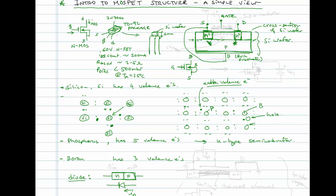If we draw that drain-bulk diode in our circuit — it points from the bulk (tied to source) to the drain. There is literally a diode there. If you took a multimeter with a diode tester and put the red lead on the source and the black lead on the drain, with gate-to-source shorted so the transistor is supposed to be off, your diode meter would actually beep and show a forward voltage — there really is a diode there.